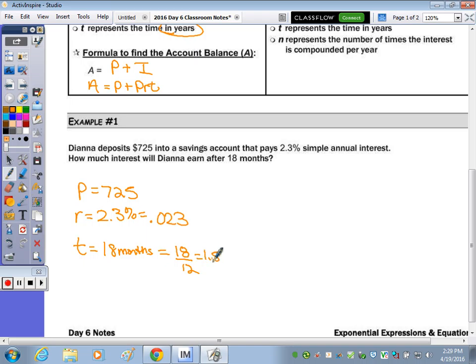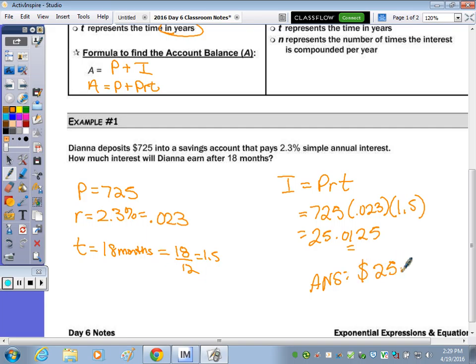So our interest is P times R times T, so $725 times .023 times 1.5. And you always need to have your answer in terms of money. So that's to the nearest hundredth or cent when rounding. So how much interest? Well, when you do this calculation, you get 25.0125. So if I'm talking about money to the nearest cent, that 2 to the right of the 1, is it going to raise it up to 2 cents or keep it 1 cent? Keep it 1. So the answer is $25.01 is the amount of interest that she's going to earn on her account.